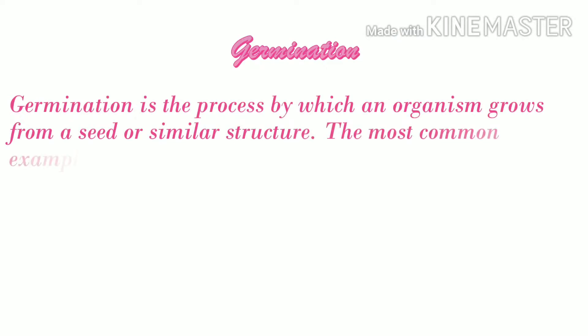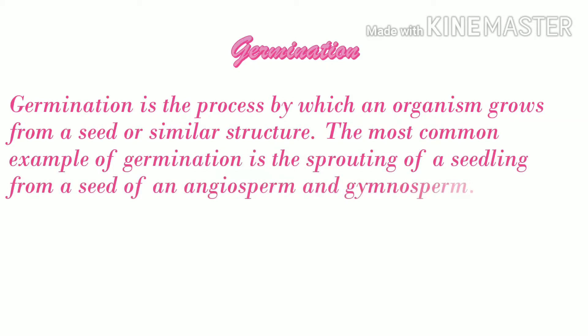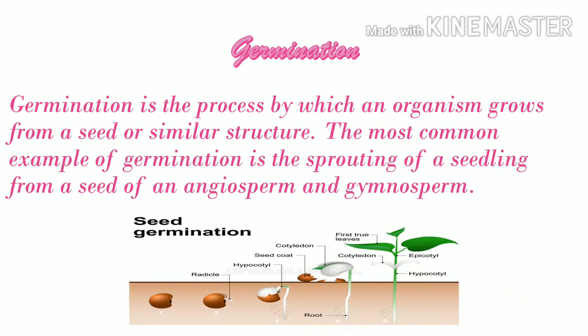Germination is the process by which an organism grows from a seed or similar structure. The most common example of germination is the sprouting of a seedling from a seed of an angiosperm and gymnosperm. In this picture, we can observe how a seed grows into seedlings or a new baby plant.